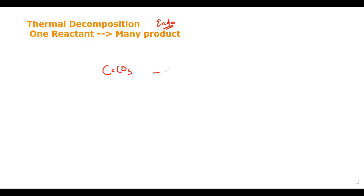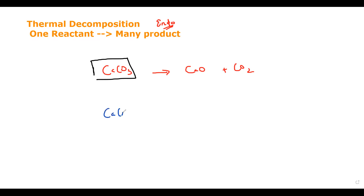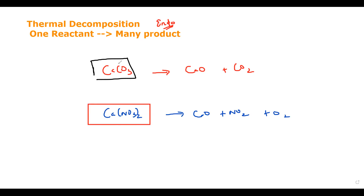For example, calcium carbonate heated gives calcium oxide plus carbon dioxide — that is thermal decomposition because there is only one reactant and many products. Similarly, calcium nitrate heated gives calcium oxide plus nitrogen dioxide plus oxygen. That is also thermal decomposition because there is one reactant and many products.